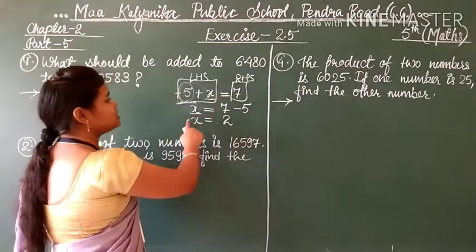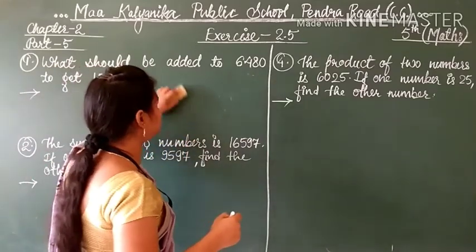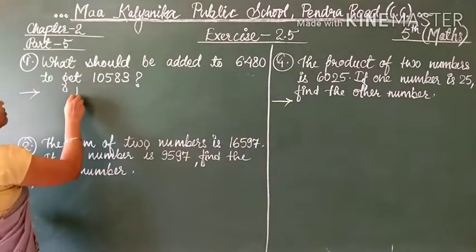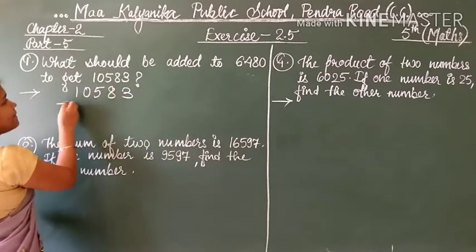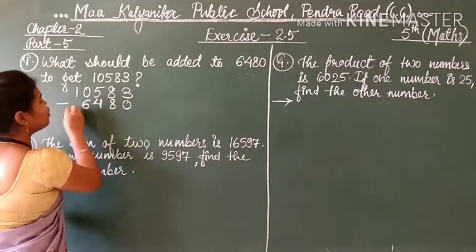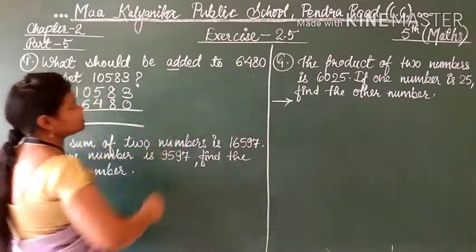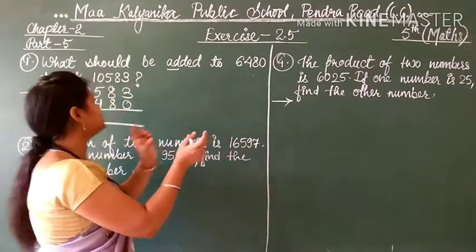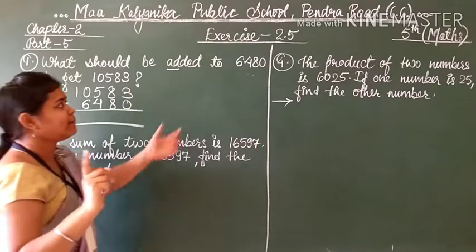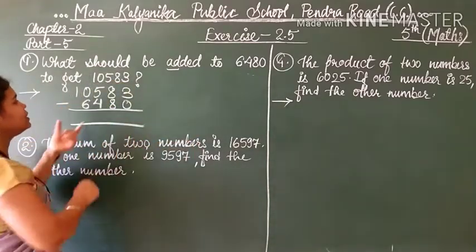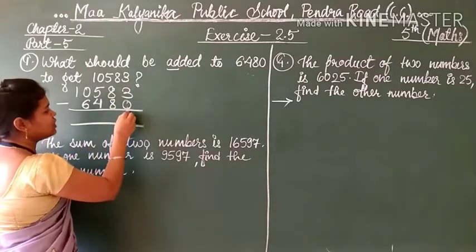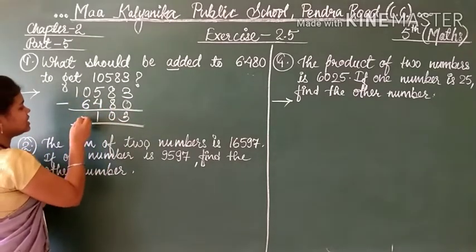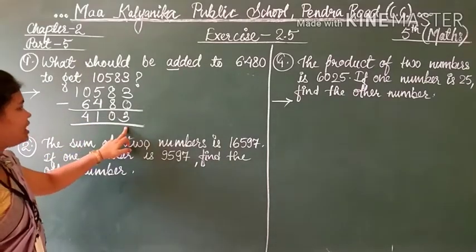So how to solve this? You have to subtract the given number from the bigger number. For question number 1: 10,583 minus 6,480. Don't be confused — the question says 'add', but since one number and the total are given, you find the missing number by subtracting. 3 minus 0 is 3, 8 minus 8 is 0, 5 minus 4 is 1, and 10 minus 6 is 4. So 4,103 is your answer.